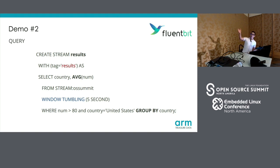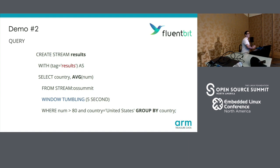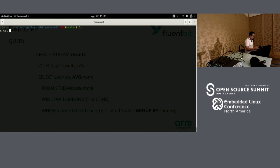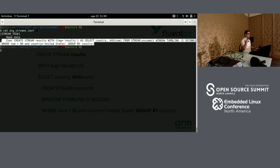Another demo — and I think this is most interesting — is how to aggregate information. In this second demo, I'm going to run this query, which becomes a bit longer. We're going to create the same stream called 'results.' I'm going to select country but calculate the average of num. So we're going to summarize and calculate the average every five seconds — that means for the whole data flowing through the pipeline, calculate the average and group the results by country. Usually, to accomplish this you would ingest all the records in a database and run this query. But here we're skipping all that database, all that indexing.